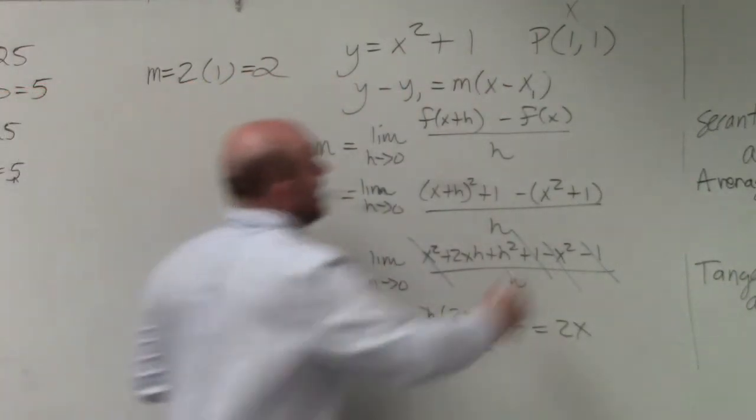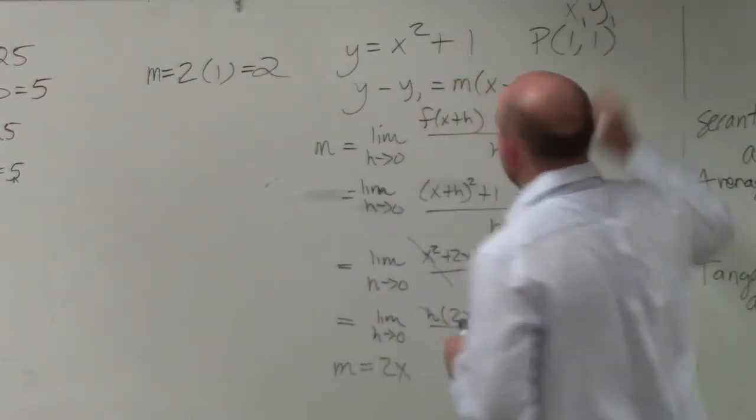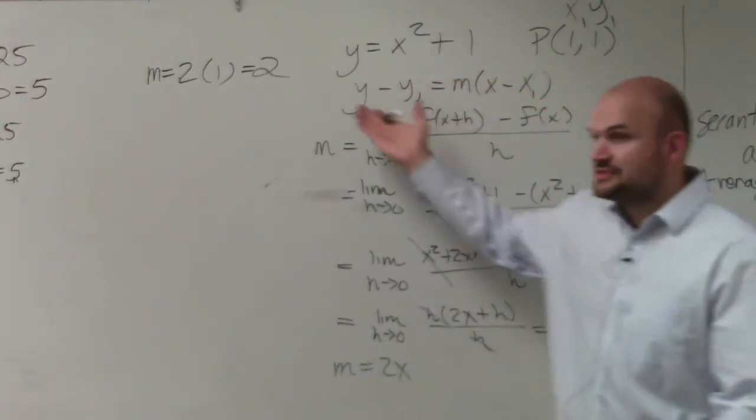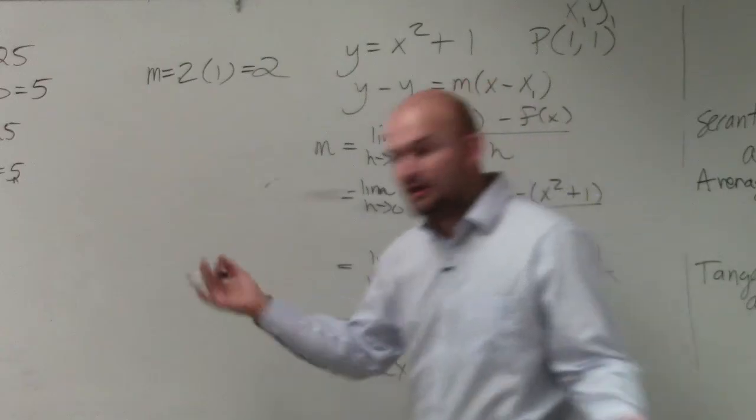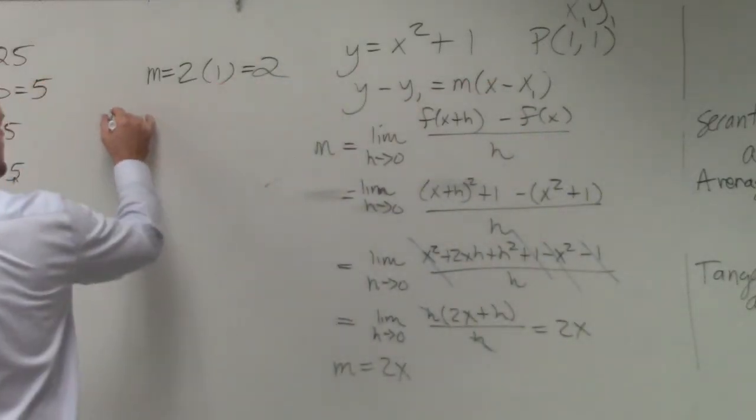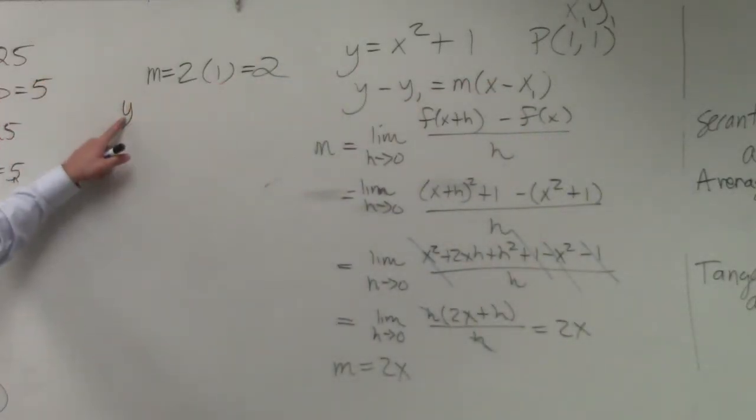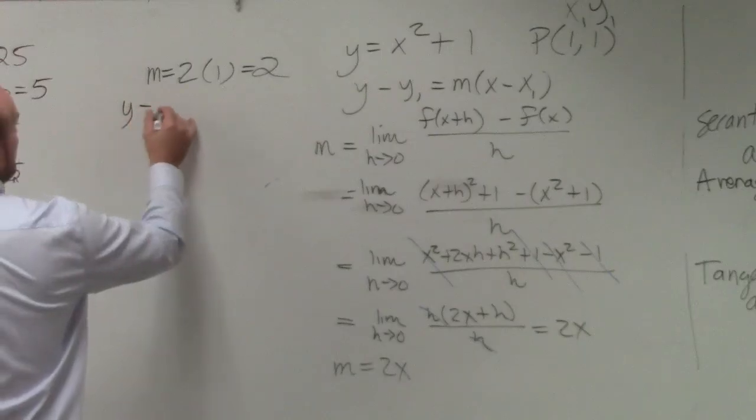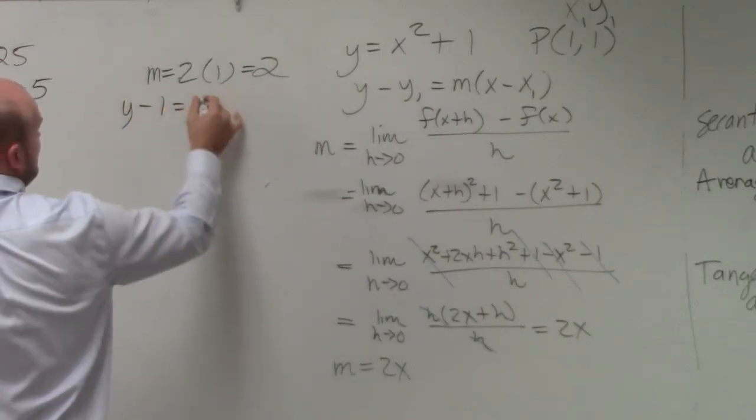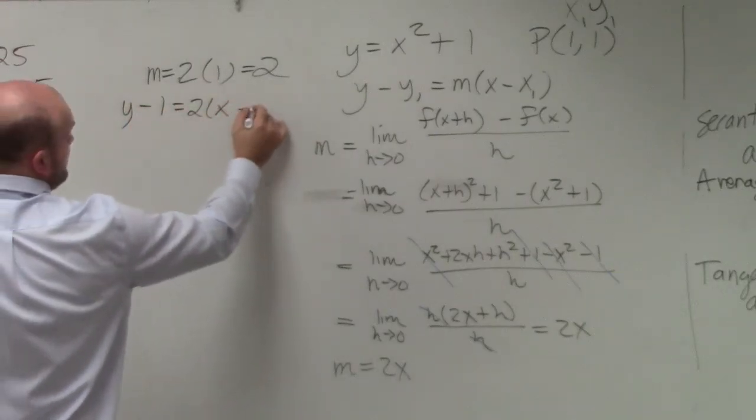Well, now I have an x and a y, which I can call x₁y₁, and I have a slope. Can I now write the equation of the line? Of course I can. So I just write y minus y₁, which is 1, equals m, which is now 2, times x minus 1.